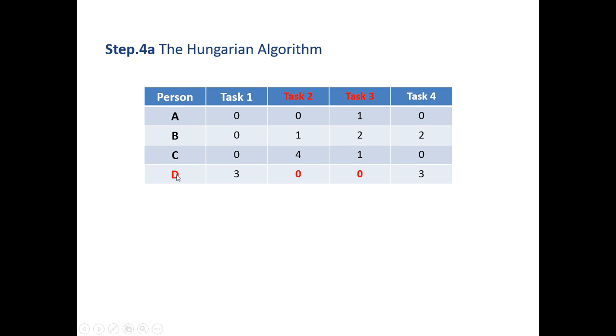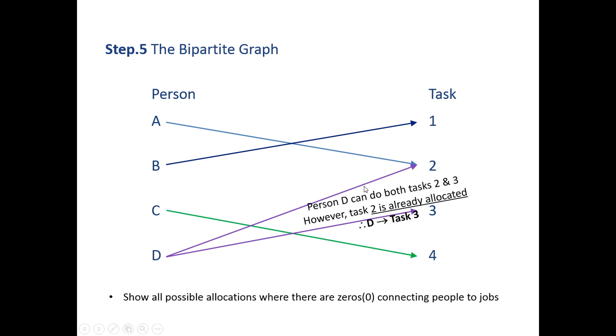Let's go through the steps again. Person D can complete task 2 or 3 based on the zeros. However, task 2 has already been allocated to person A, so that leaves person D with only task 3 to complete. Now we have allocated each person a particular job.